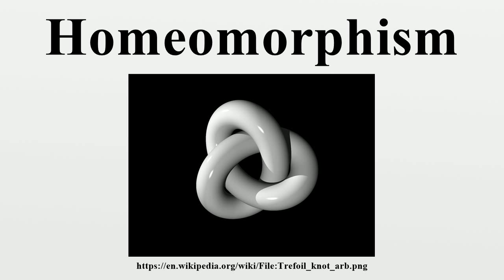If G is a topological group, its inversion map is a homeomorphism. For any element, the left translation, the right translation, and the inner automorphism are homeomorphisms. Non-examples: Rᵐ and Rⁿ are not homeomorphic for m ≠ n. The Euclidean real line is not homeomorphic to the unit circle as a subspace of R², since the unit circle is compact as a subspace of Euclidean R² but the real line is not compact.